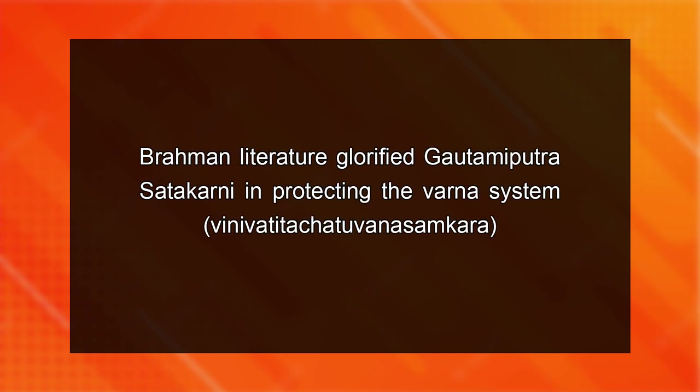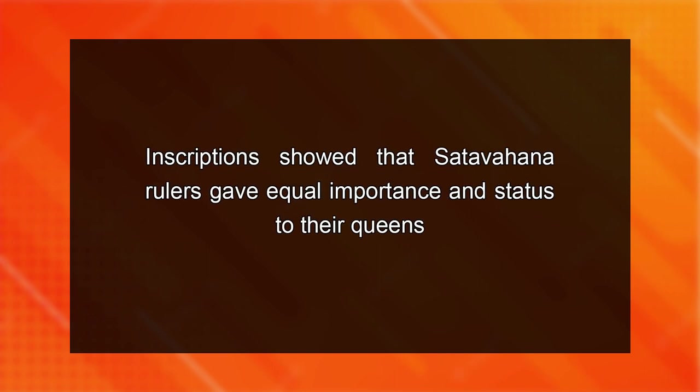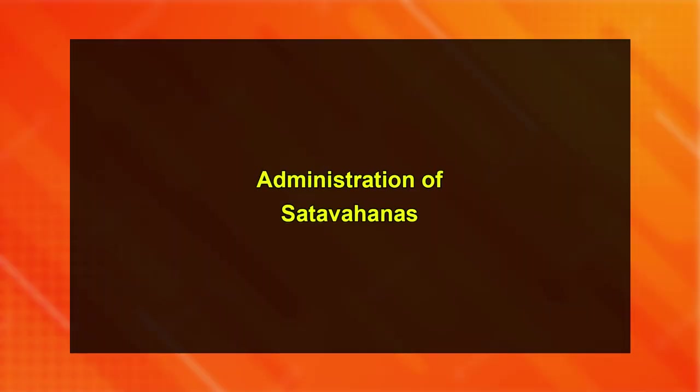Brahmanical literature glorified Gautamiputra Satakarni for protecting the Varna system. Inscriptions showed that Satavahana rulers gave equal importance and status to their queens. Both Nayanika and Gautami Balashri were given equal powers. Nayanika in fact served as queen regent when her son was a minor. Her name was inscribed on one side of coins, with her spouse Satakarni's name on the other.